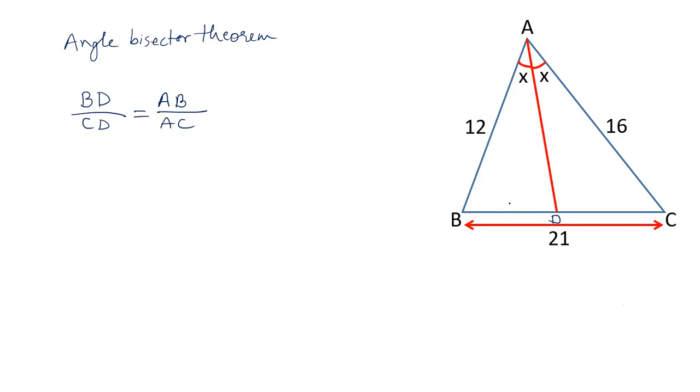Suppose this length is X, this length will be 21 minus X because BC is 21. So, we assume that BD is equal to X and CD is equal to 21 minus X.